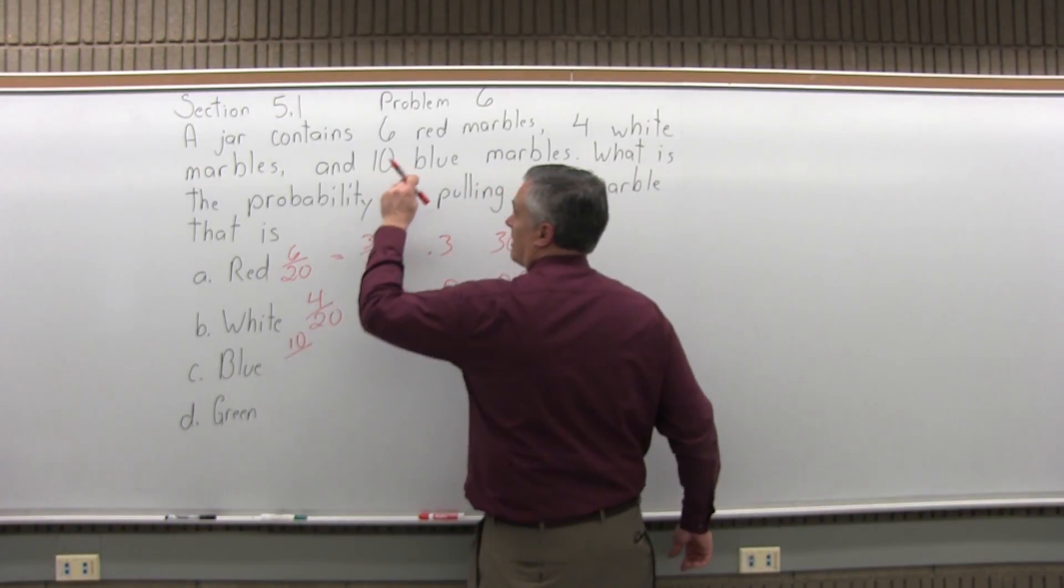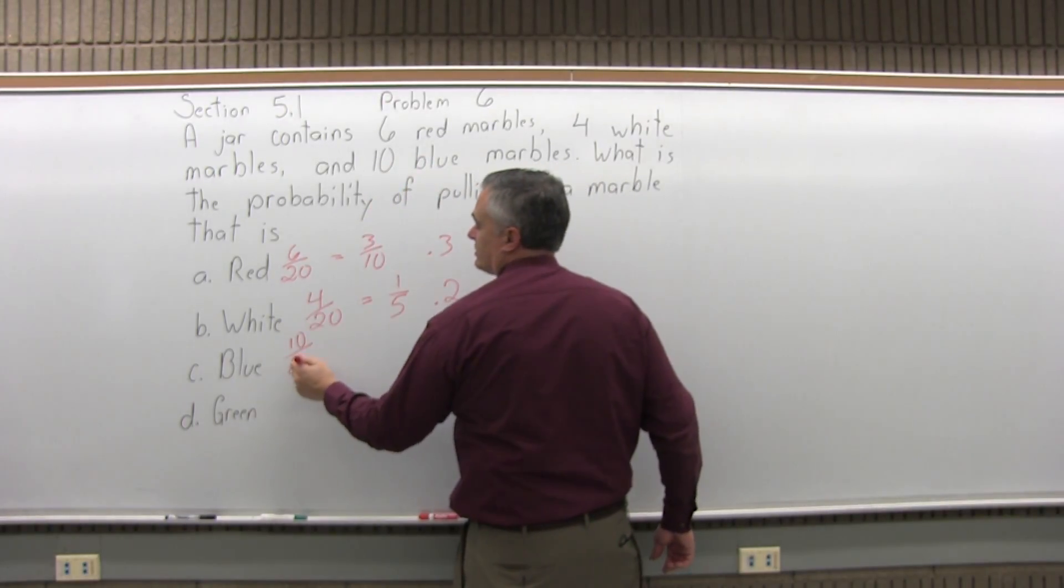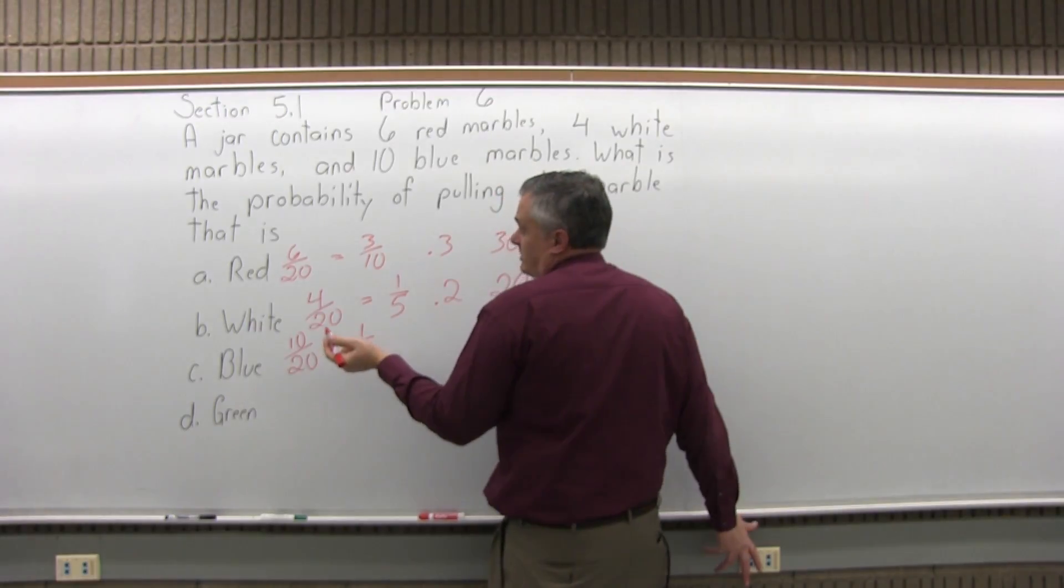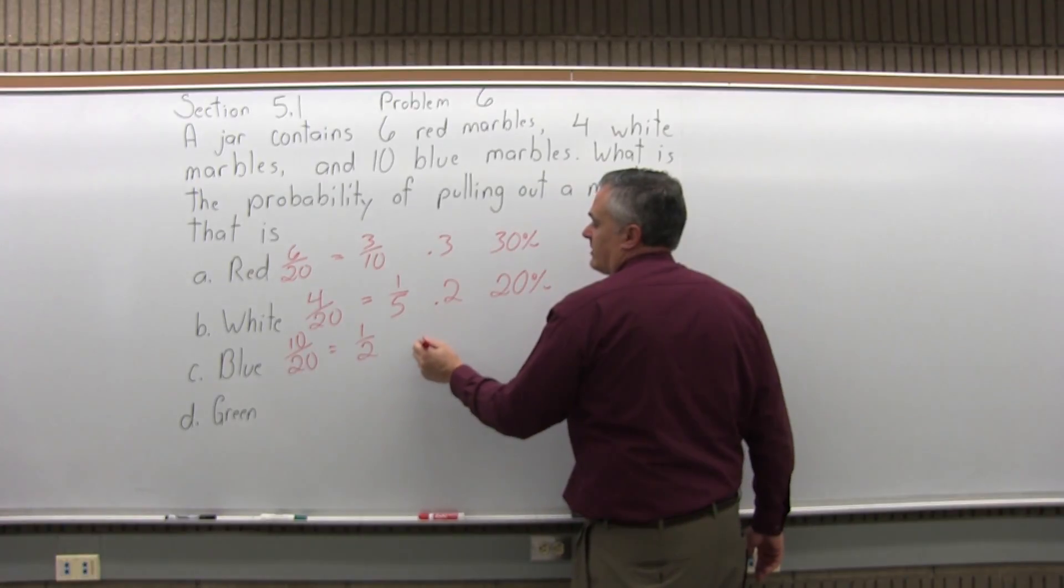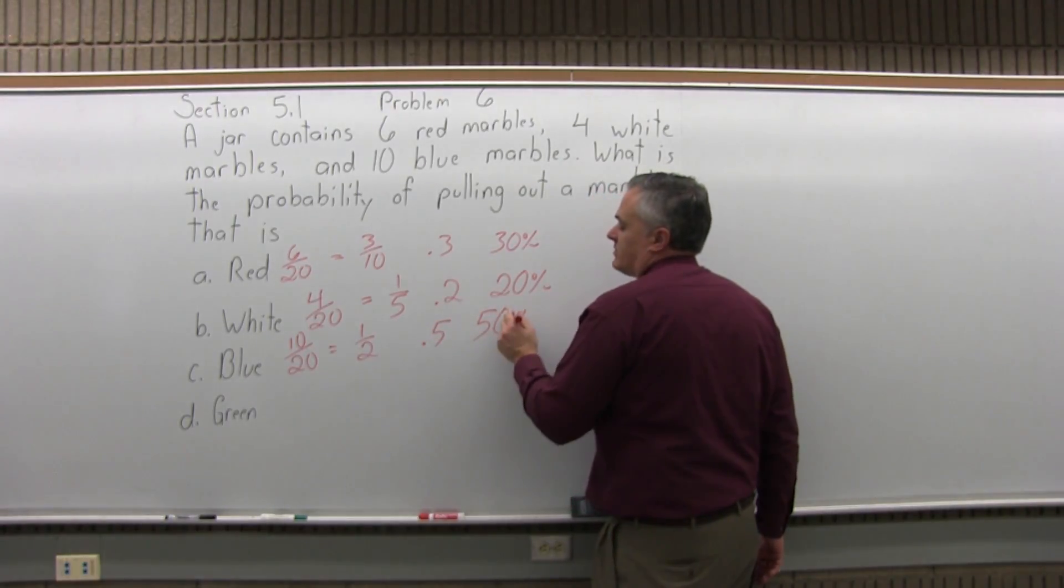Blue, there's 10 blue marbles out of 20 altogether, so 10 over 20, which can reduce to 1 half. Half the marbles in the jar are blue, 10 out of the 20. And half as a percent, or a decimal, is 0.5, which can be written as 50 percent.